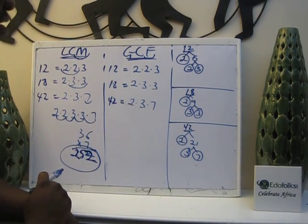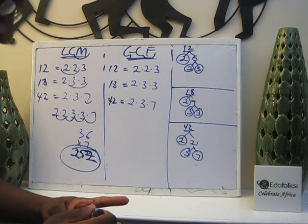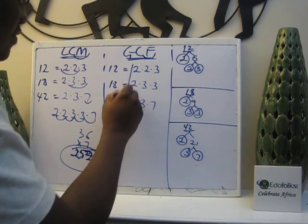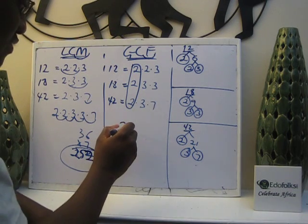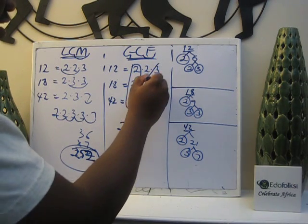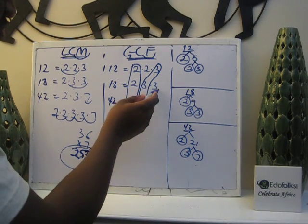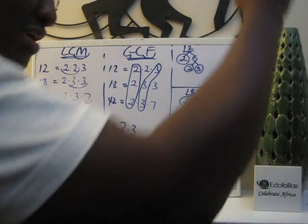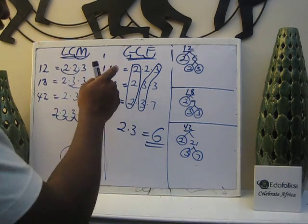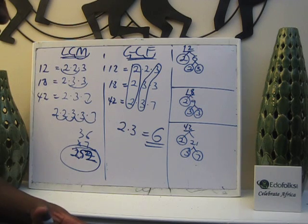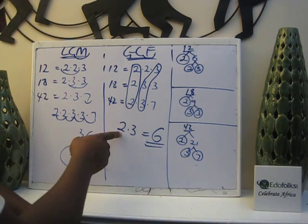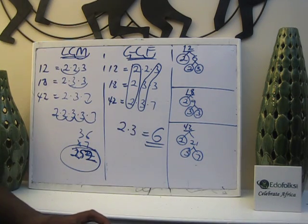Now let's look at the greatest common factor. The key word is 'factor' — we are looking for something very small that they all have in common, if there is any at all. I see a 2 in each of the three factorizations, so I put a 2. I see a 3 in 12 and a 3 in 18, so I take a 3. But 7 only appears in 42, not in the others, so it doesn't qualify. The greatest common factor of 12, 18, and 42 is 6. That means 6 is the greatest number that can divide 12, 18, and 42. The common factors are 2, 3, and 6, but 6 is the greatest common factor. That's how you solve that problem.